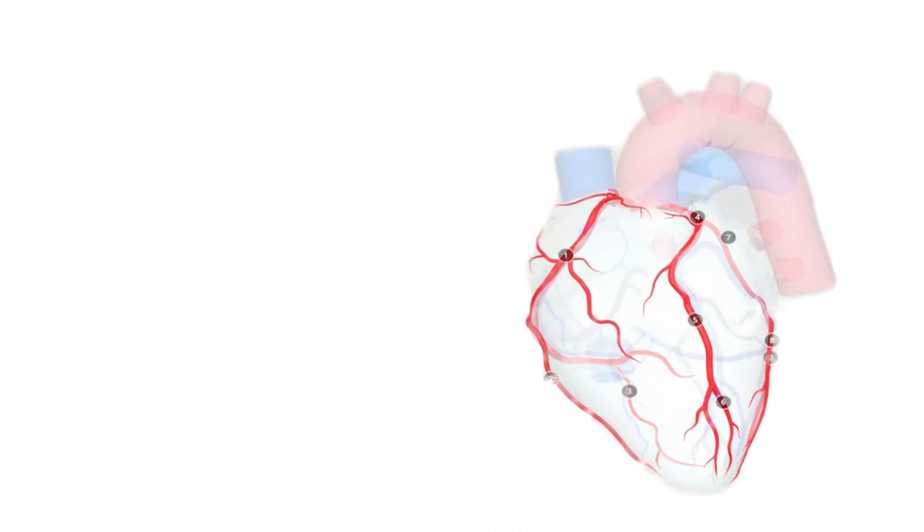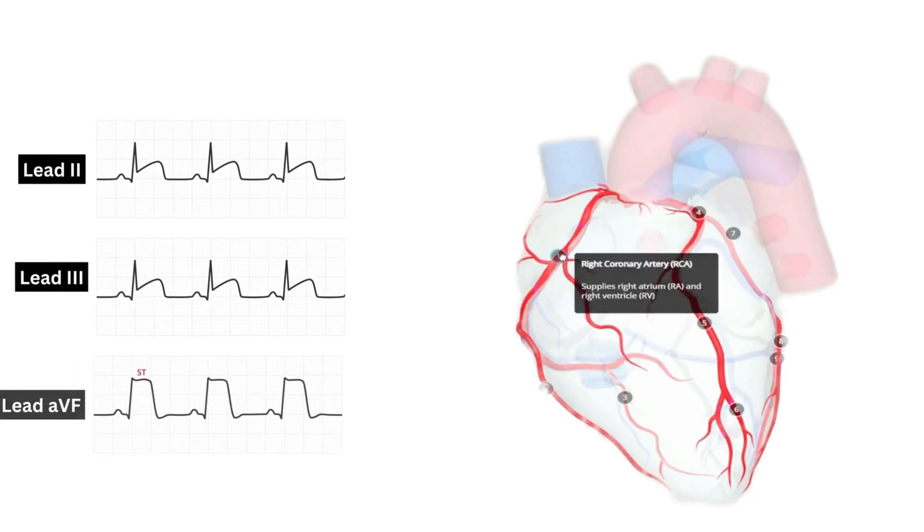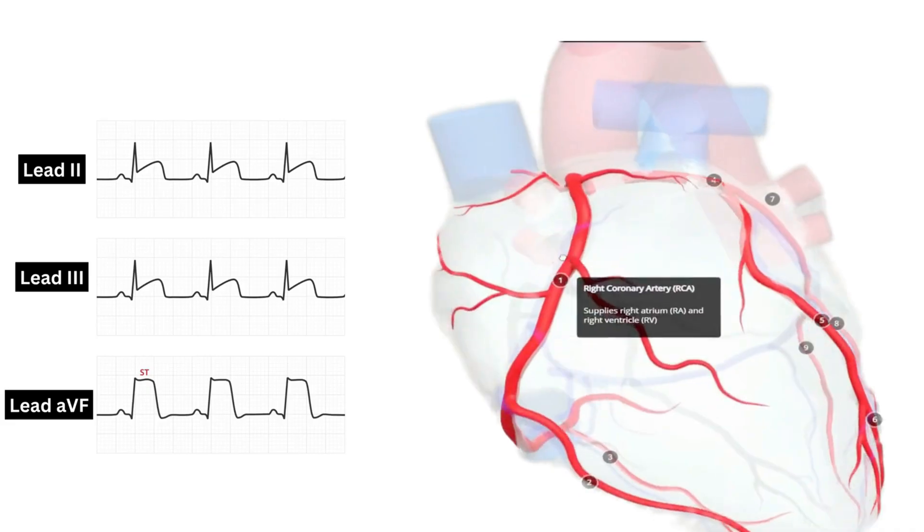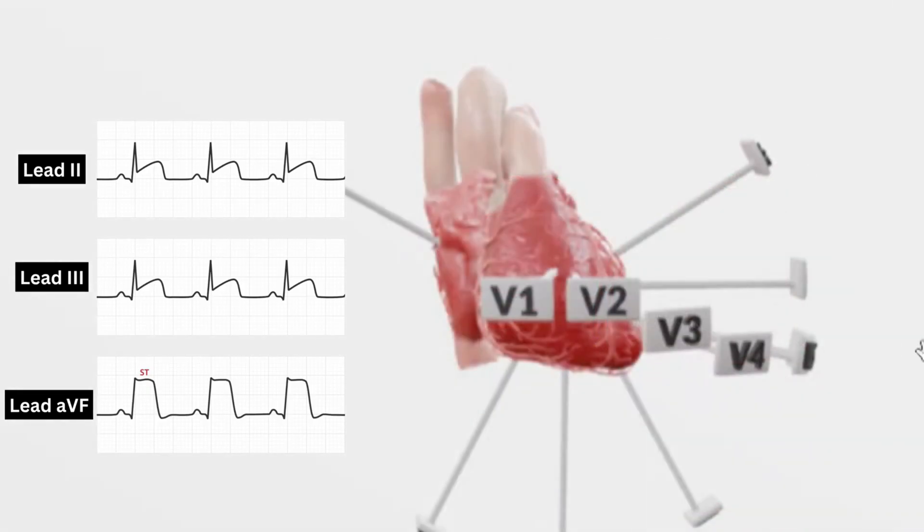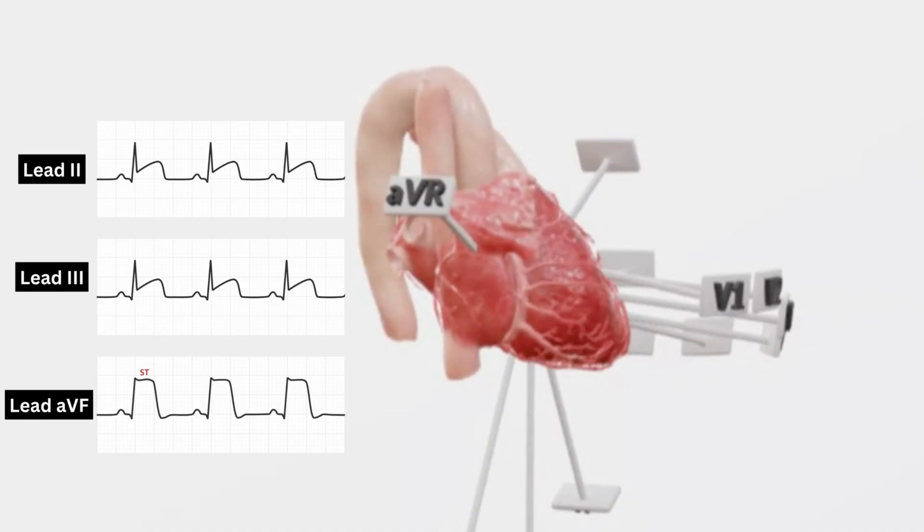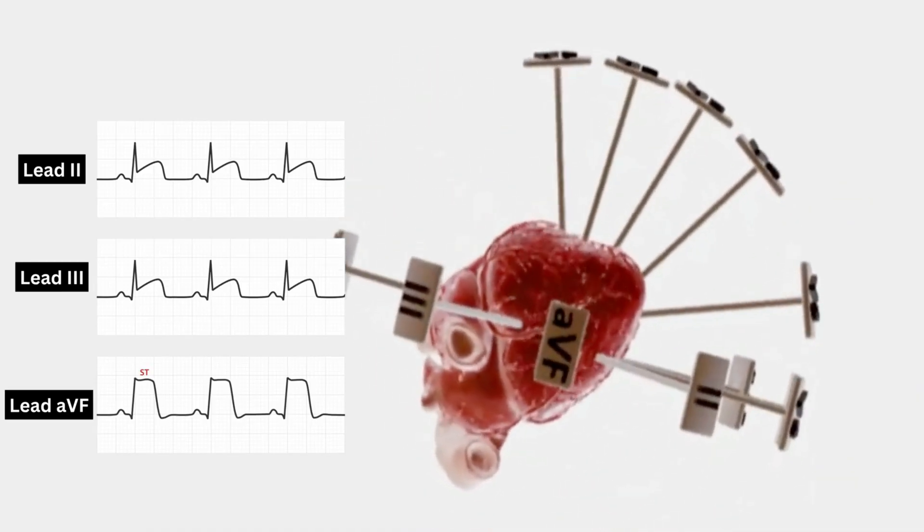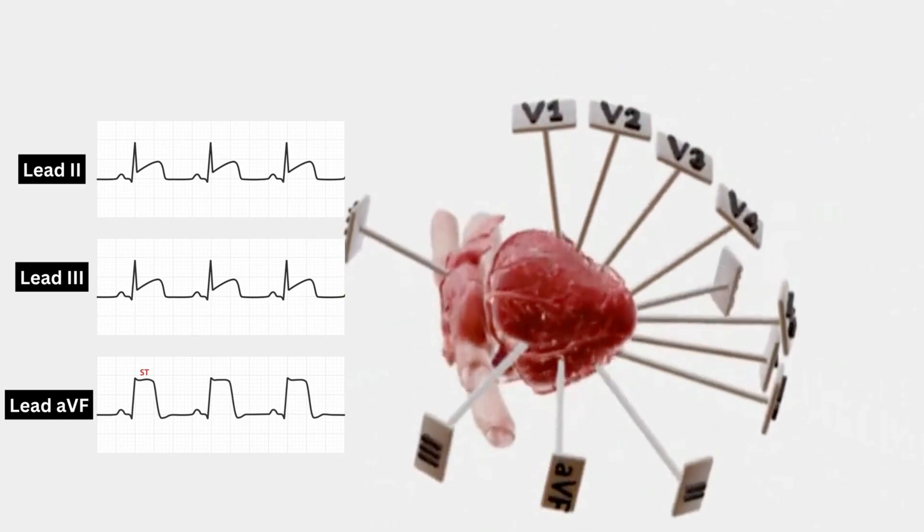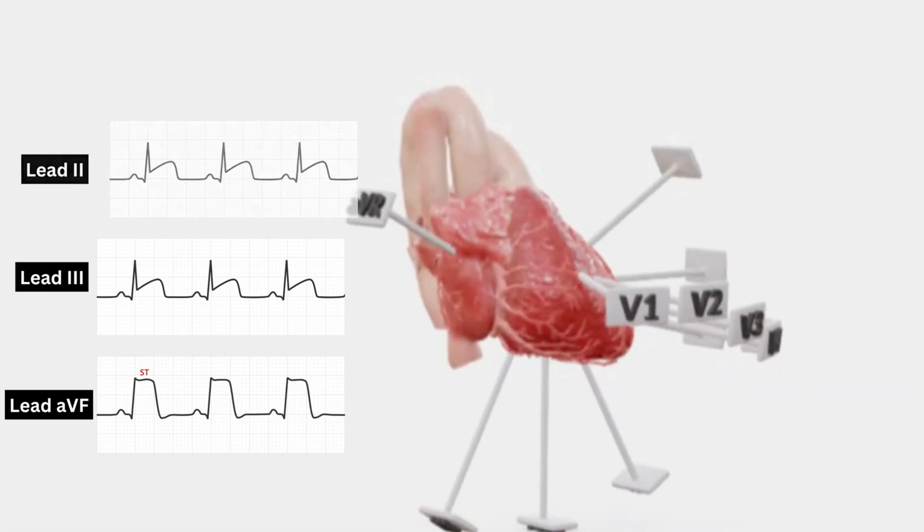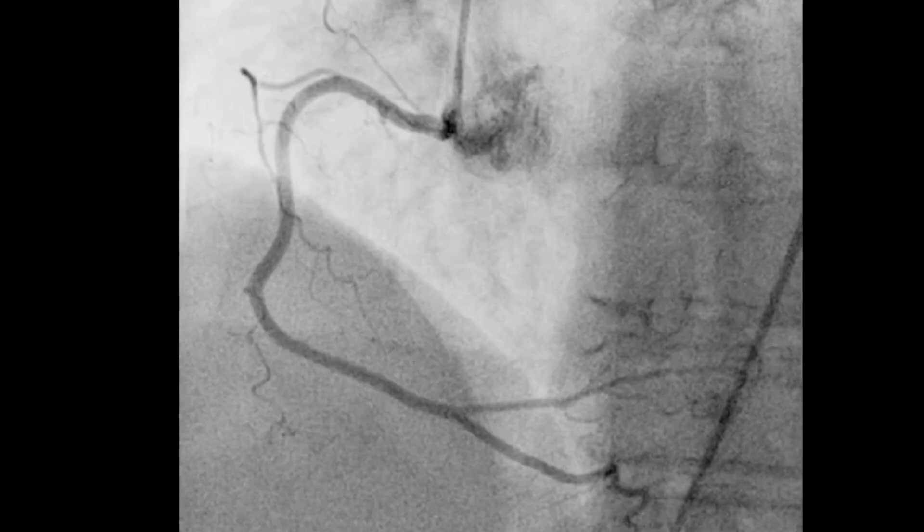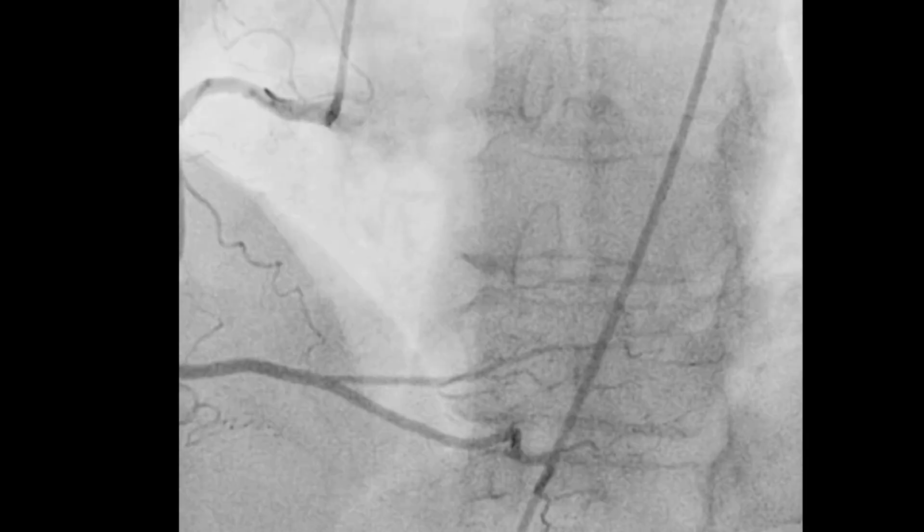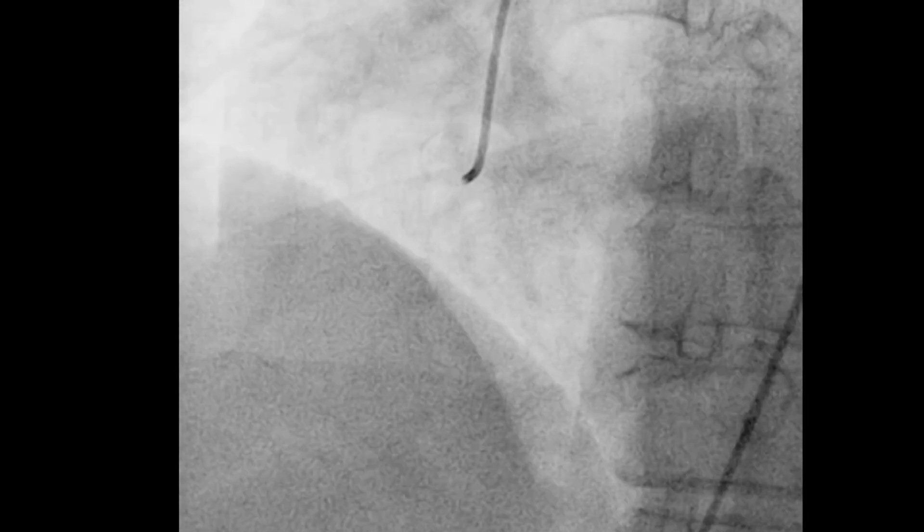Let's go step by step. First the RCA or the right coronary artery. Now if the RCA is blocked we see ST segment elevation in lead 2, 3 and AVF. This tells us that the inferior wall of the heart is getting affected because right coronary arteries supply blood to the inferior wall of the heart. Now on the angiography the RCA blockage is shown as a narrowed or completely occluded vessel running along the right side of the heart.